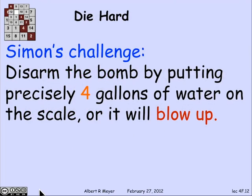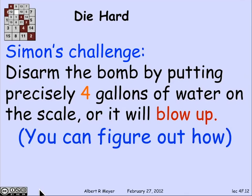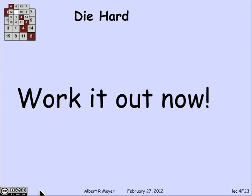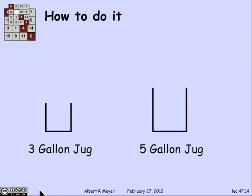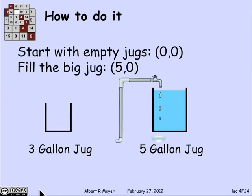Let's go back to Simon's challenge. He wants to disarm the bomb by getting exactly four gallons of water in a jug and measuring it on the scale, or things will blow up. Why don't you take a moment to think about it? But just to understand the rules and watch them work — we're going to start off with both jugs empty, so we start in state (0, 0).